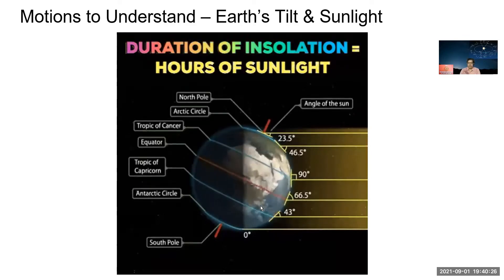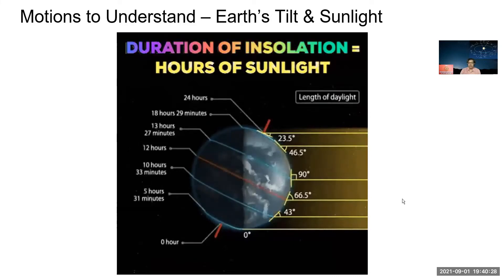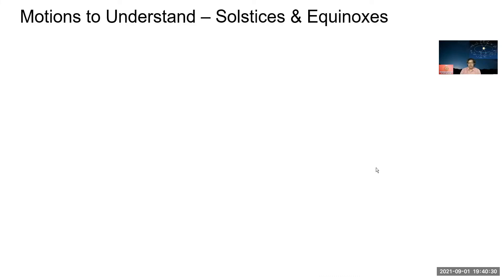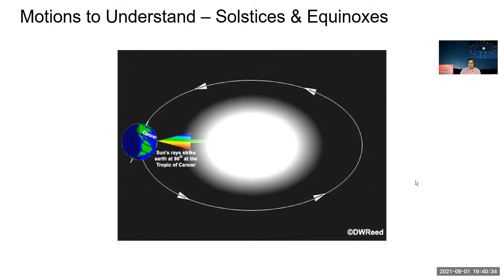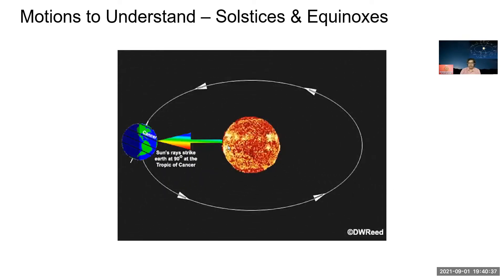The next one is the solstices and equinoxes. In this one you can find that Earth is orbiting here, similar to the image I showed. It's directly hitting sun rays at Tropic of Cancer. When it comes to here, that was a solstice. When it comes here it is hitting directly at the equator because of the tilt and this motion.